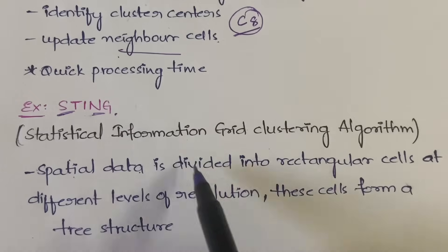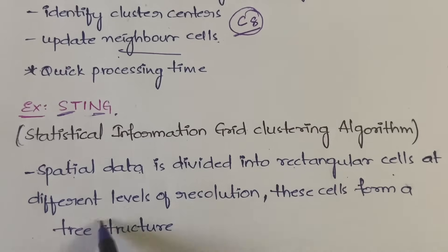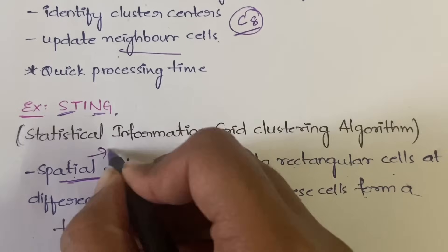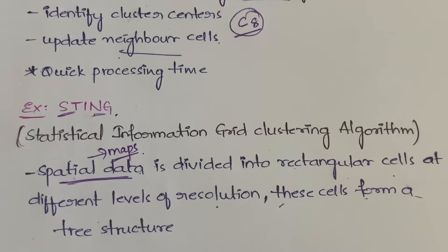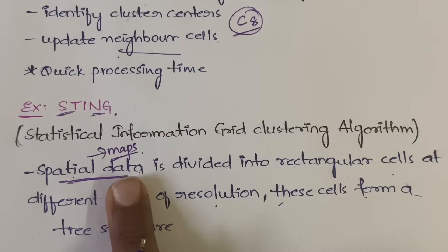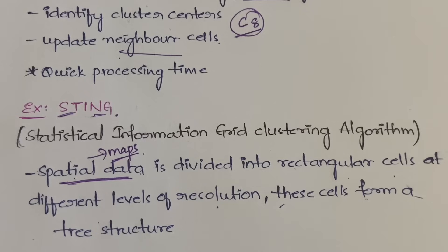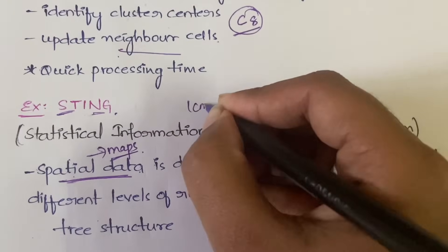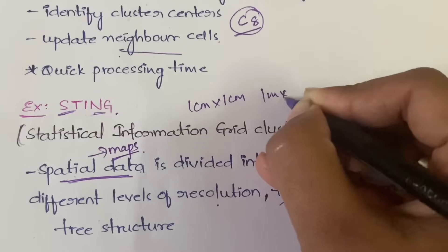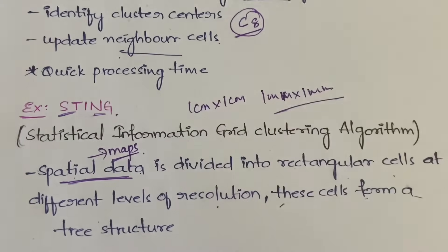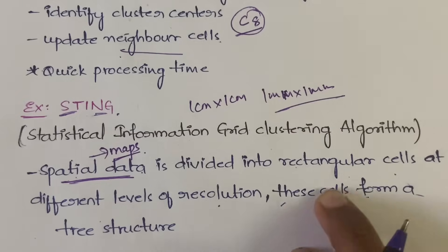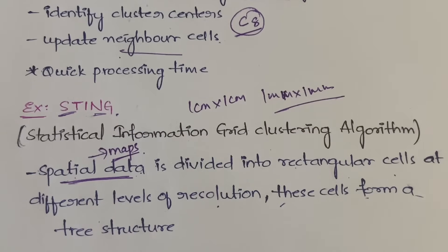In STING, the spatial data is divided into rectangular cells at different levels of resolution, and these cells form a tree structure. Spatial data refers to map data — for example, Google Maps is a typical example of spatial data. The spatial data is divided into rectangular cells at different levels of resolution — you can choose whether to divide into one-centimeter by one-centimeter cells or one-millimeter by one-millimeter cells — and these cells form a tree-like structure.